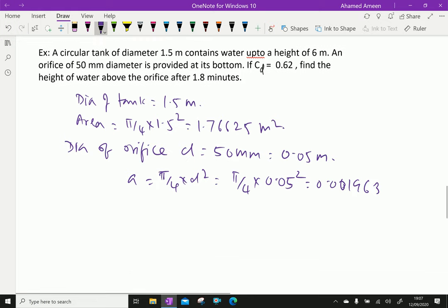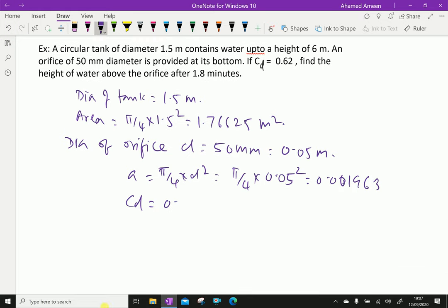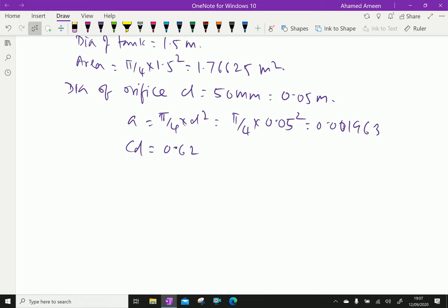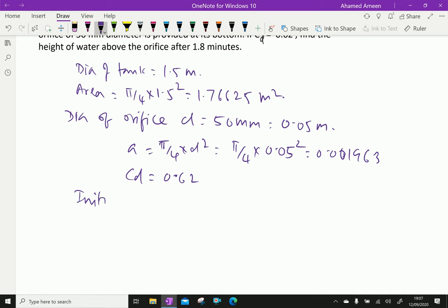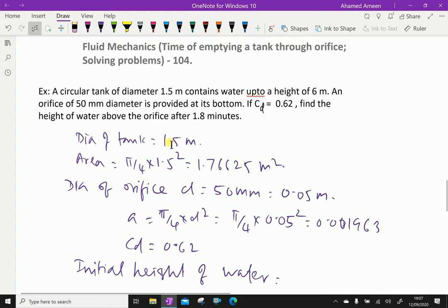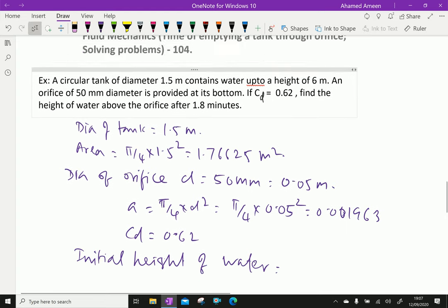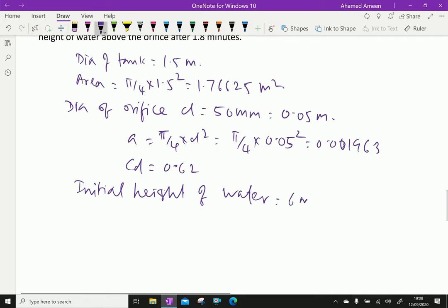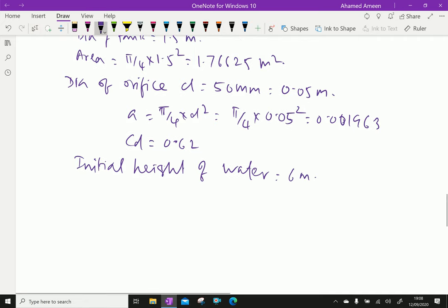Next is Cd. Coefficient of discharge is 0.62. Initial height of water H1 equals 6 meter.